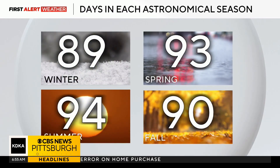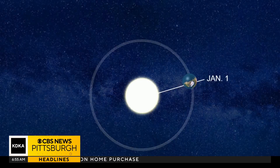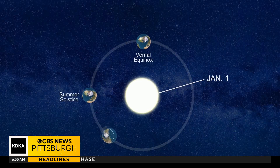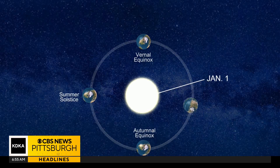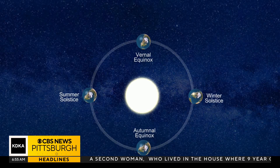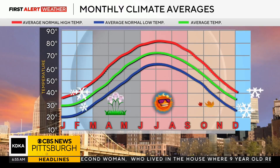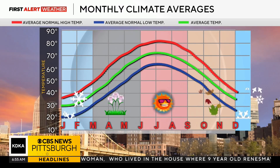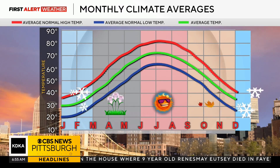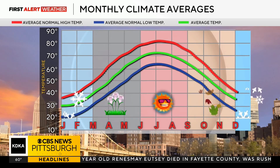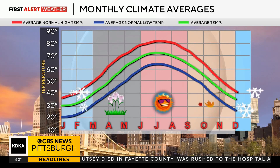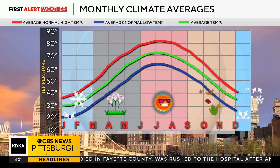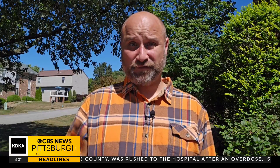Because astronomical seasons are tied to the solstices and equinoxes, breaking the meteorological seasons up into three-month chunks simplifies record-keeping and the ability to share data. The other big reason is that the weather in the meteorological seasons more closely resembles the weather expected during that season.